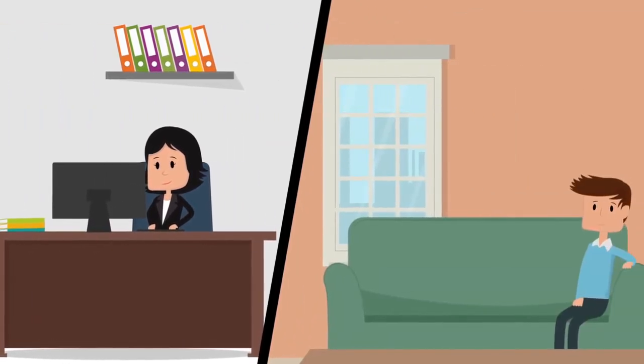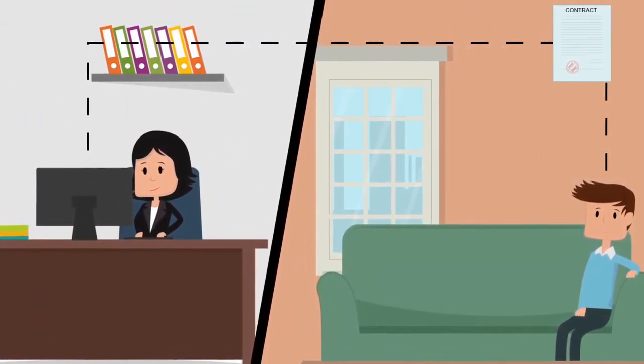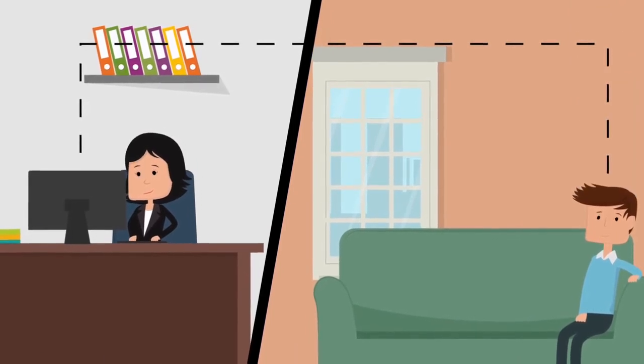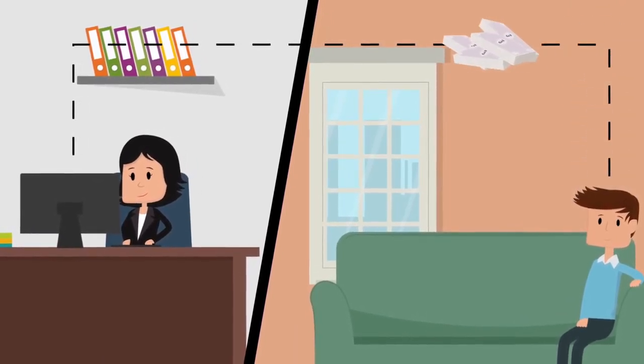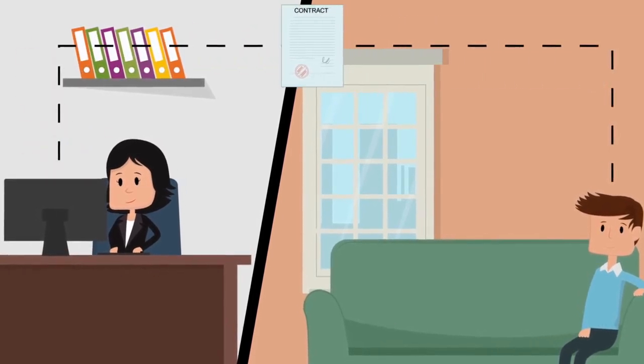As soon as they can, the conveyancers will send a contract to their clients to sign and return, so exchange of contracts can go ahead as soon as everyone in the chain is ready. The buyer will also be asked to provide their deposit, which is used as a down payment on exchange.